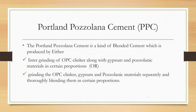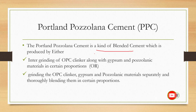Portland Pozzolana Cement (PPC) is a kind of blended cement which is produced by either intergrinding of OPC clinker along with gypsum and pozzolanic materials in certain proportions, or by grinding the OPC clinker, gypsum, and pozzolanic material separately and thoroughly blending them together in certain proportions.